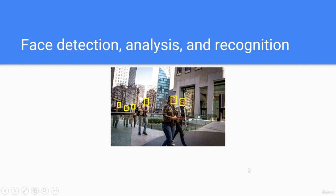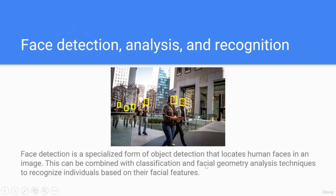Face detection, analysis, and recognition. Face detection is a specialized form of object detection that locates human faces in an image. This can be combined with classification and facial geometry analysis techniques to recognize individuals based on their facial features — here all detected faces are highlighted with a yellow square.